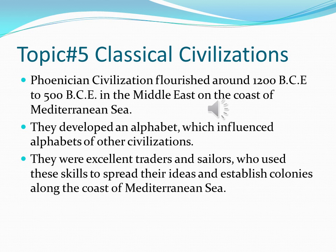Welcome back, kids. Topic number 5: Classical Civilizations. The first civilization we're going to discuss is the Phoenician civilization, which flourished around 1200 BCE to about 500 BCE in the Middle East on the coast of the Mediterranean Sea. They developed an alphabet which influenced the alphabets of other civilizations, including European civilizations and the English alphabet. They were excellent traders and sailors who used these skills to spread their ideas and establish colonies along the coast of the Mediterranean Sea. When you think about Phoenician civilization, think Mediterranean Sea.